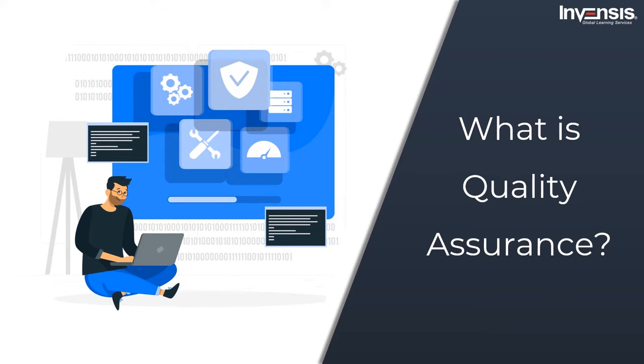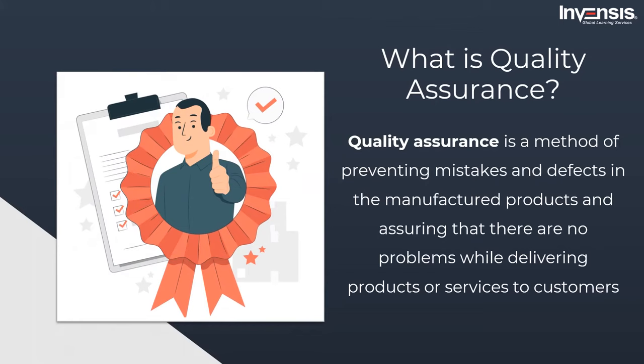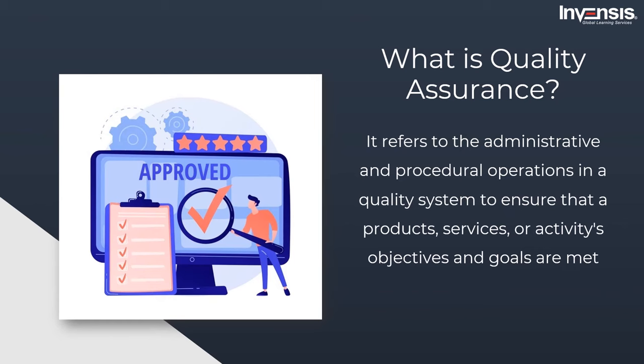Starting with our first topic: what is quality assurance? Quality assurance, or QA, is a method of preventing mistakes and defects in manufactured products and assuring that there are no problems while delivering products or services to customers. Quality assurance refers to the administrative and procedural operations carried out in a quality system to ensure that a product's, services', or activity's objectives and goals are met, also ensuring errors are prevented by systematic measurement, comparison to a standard, process monitoring, and a related feedback loop.